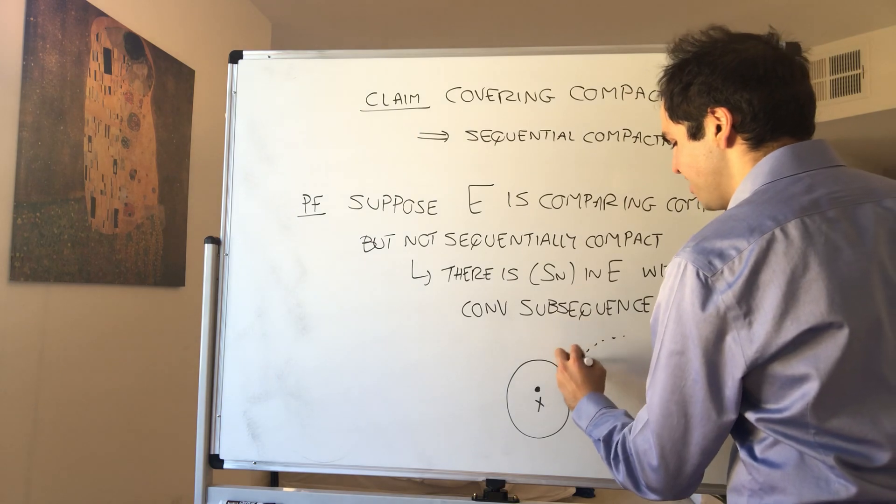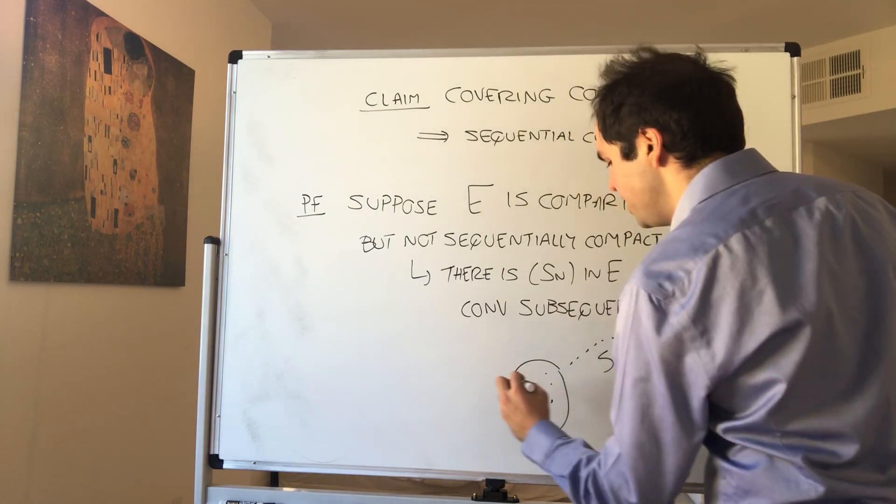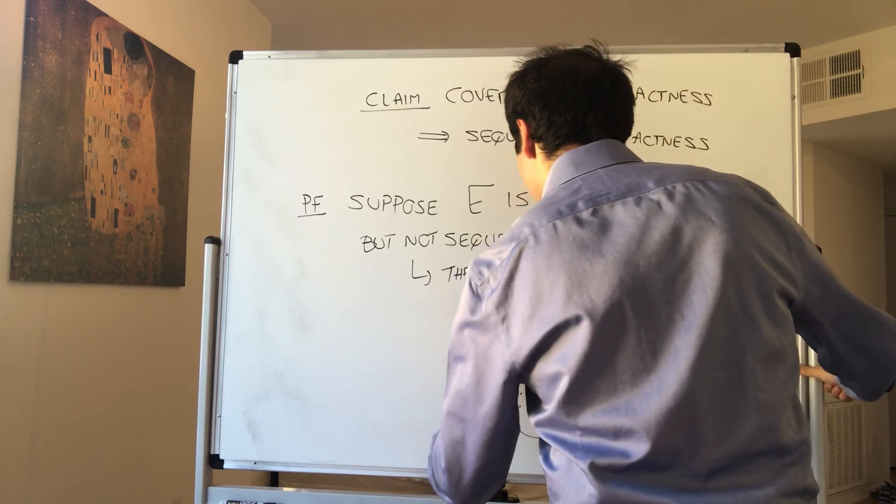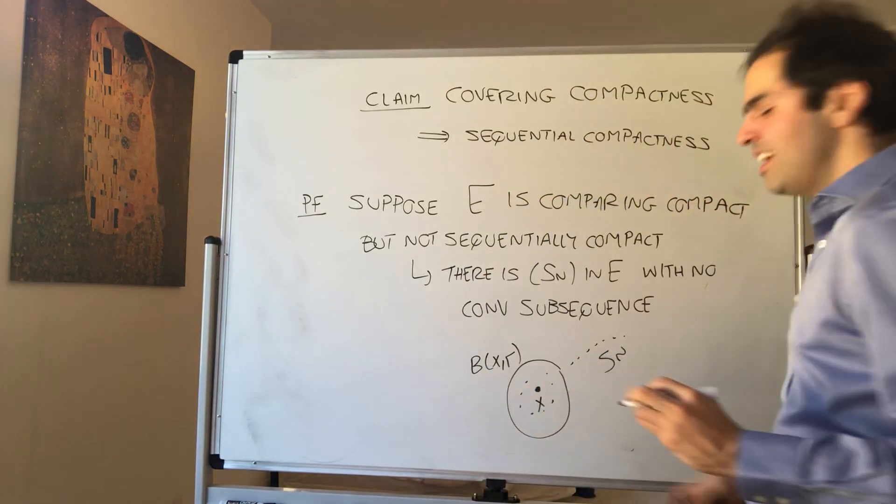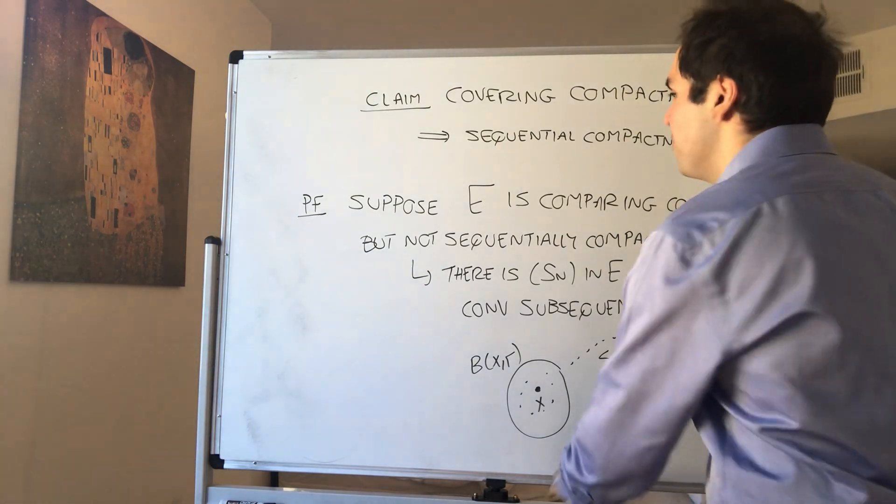I want to claim that every point X has a neighborhood that has only finitely many terms of this sequence. Namely, if you have the sequence Sn, that neighborhood, let's say B(X,R), has only finitely many terms of this sequence. So, definitely not infinitely many. So, claim.